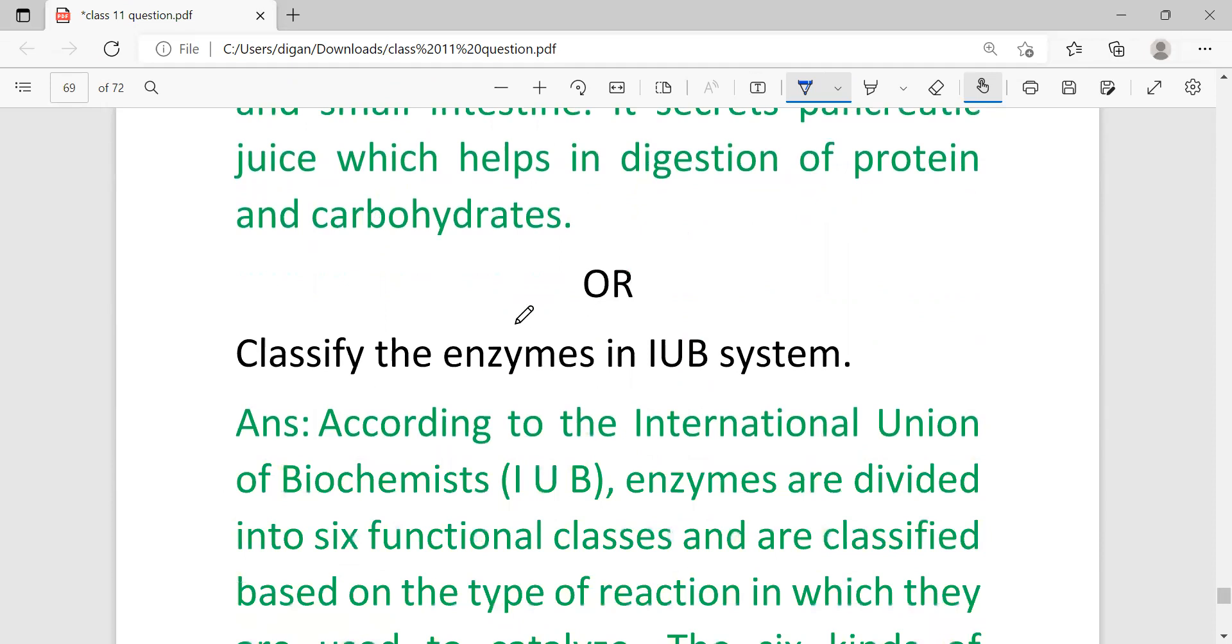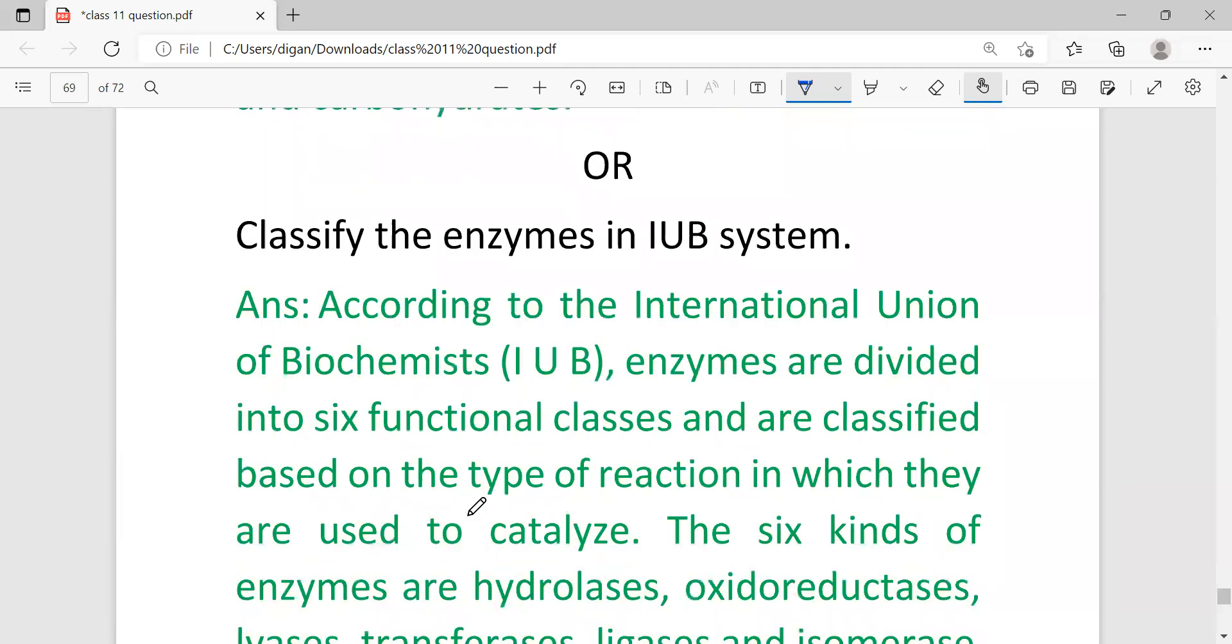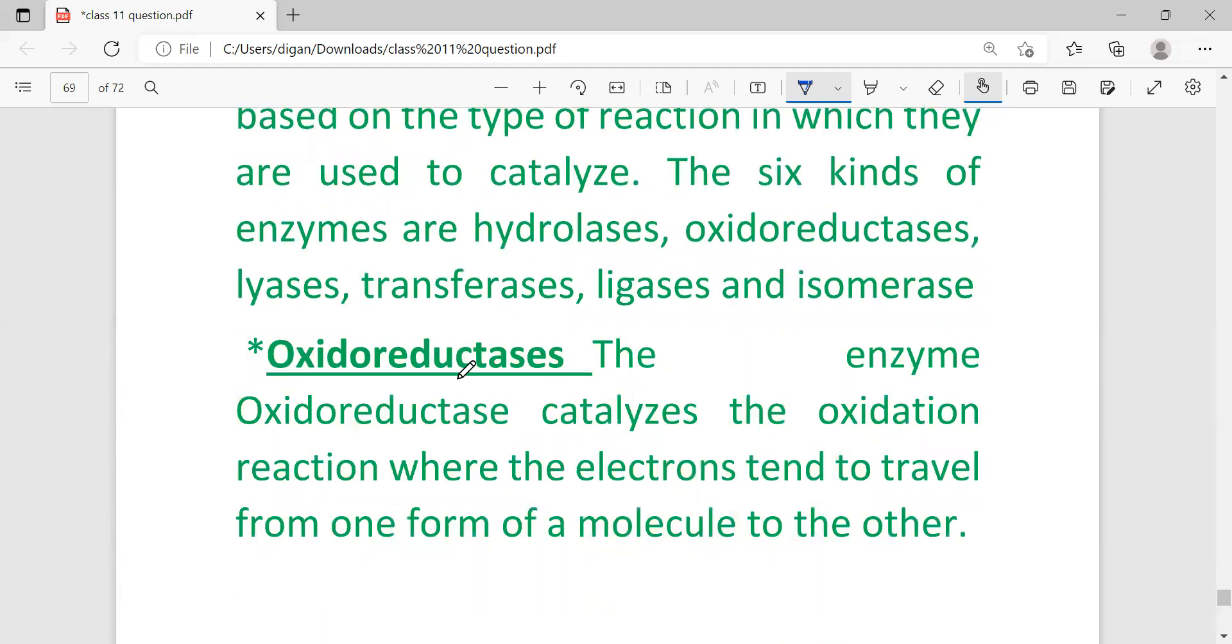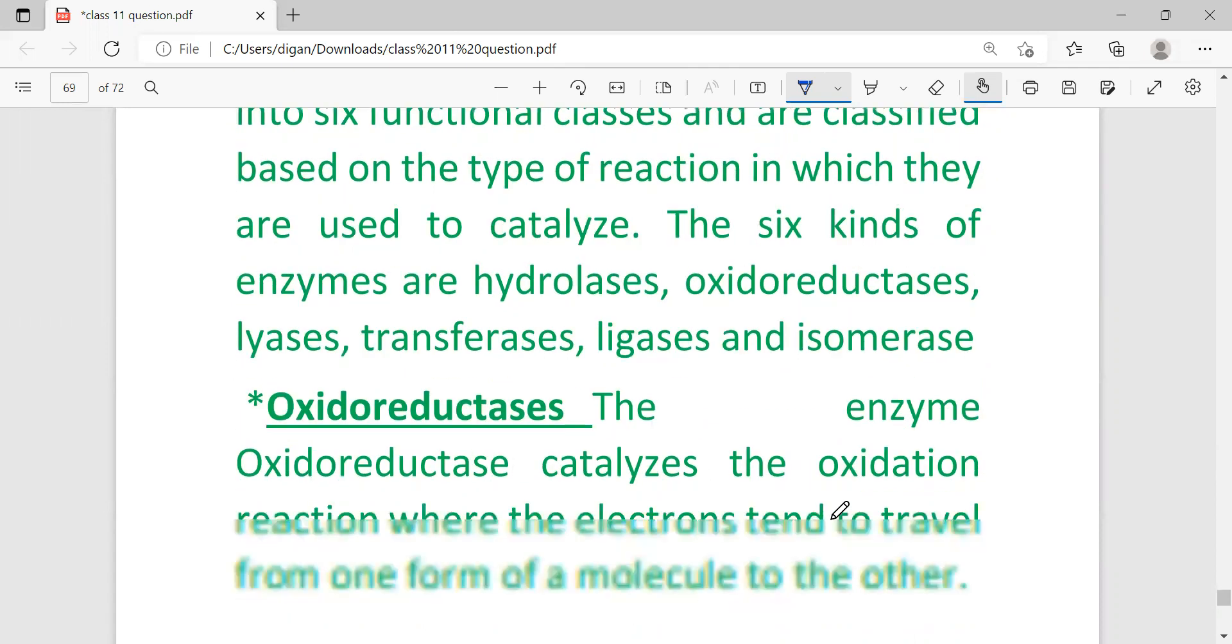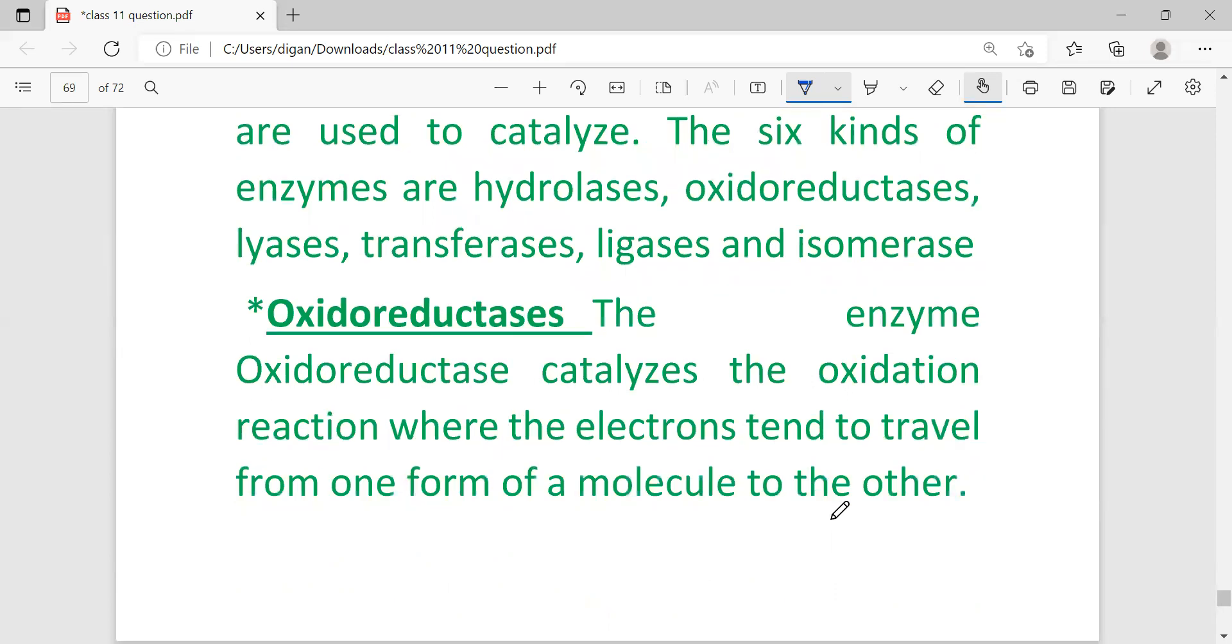Another question is: classify enzymes in IUB system. IUB means International Union of Biochemists - the full form of IUB sometimes may come, then you have to write International Union of Biochemists. Enzymes are divided into six functional classes.